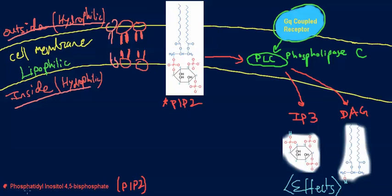One specific phospholipid is PIP2. PIP2 stands for phosphatidyl inositol 4,5-bisphosphate. Breaking down the name: P stands for phosphatidyl, I stands for inositol, and P2 means bisphosphate. P2 is bisphosphate; P3 would be triphosphate. So PIP2 is a phospholipid in the cell membrane.